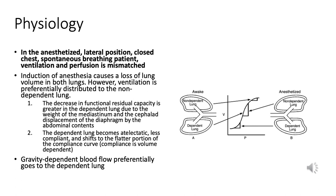In summary, in an anesthetized patient lying on their side, the dependent lung on the bottom gets less air but more blood, while the non-dependent lung on the top gets more air but less blood. This mismatch can make oxygenation and removal of carbon dioxide less efficient.